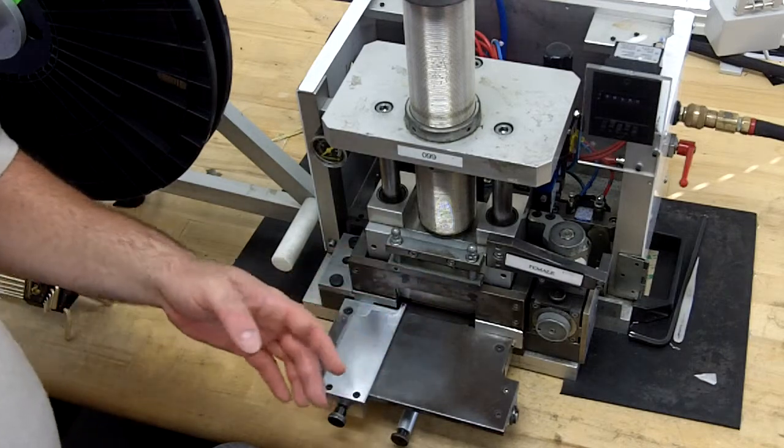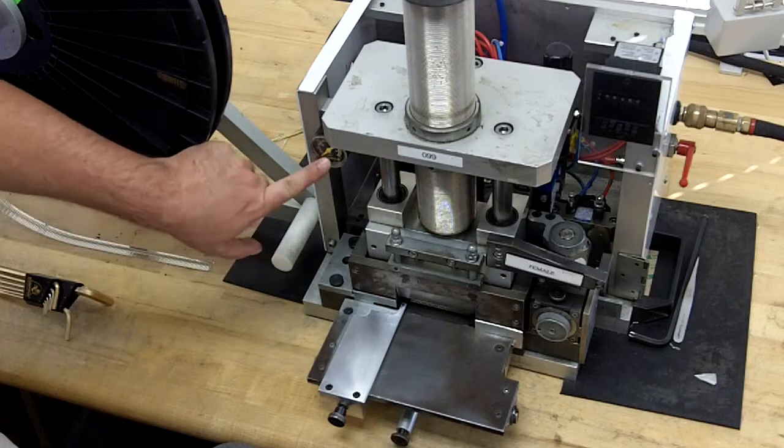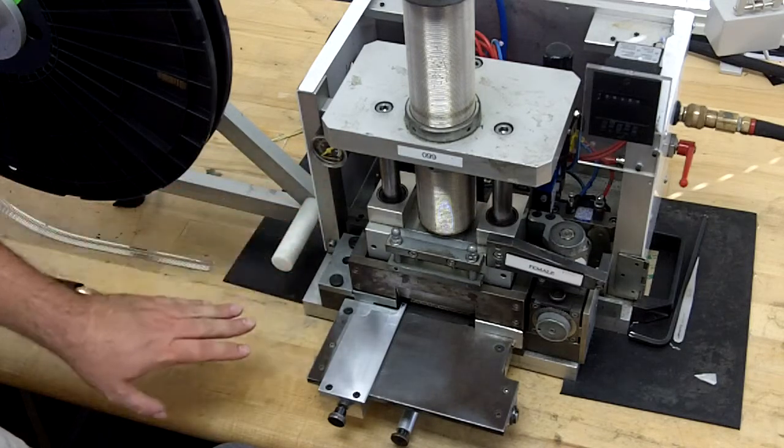The first thing we're going to do is make sure that we have our air turned off, which we do. You can see by the pressure gauge here, air is registering at zero.